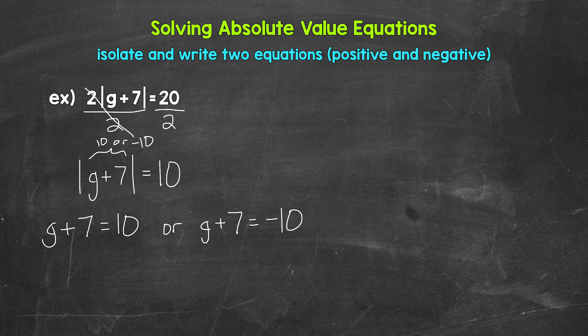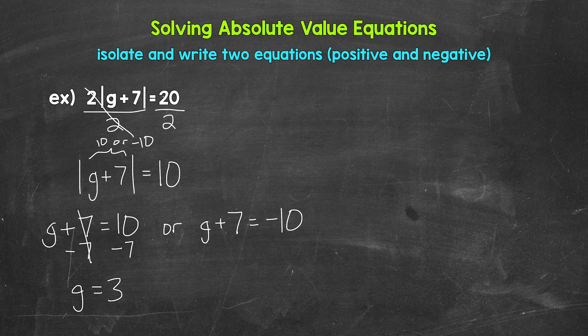Now we need to solve those to get our solutions. Let's start with g plus 7 equals 10 and isolate the variable g. We need to subtract 7 from the left side, which means we subtract 7 from the right side as well. These 7s cancel each other out, g is now isolated, and 10 minus 7 gives us 3. So g equals 3.